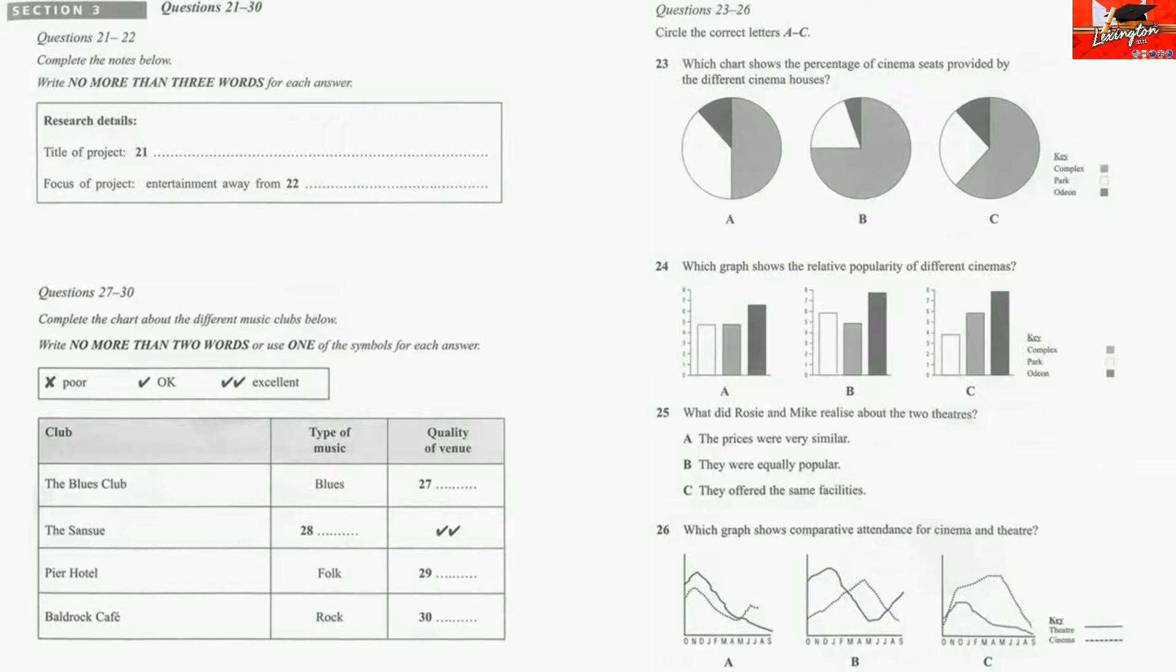We deliberately omitted those as we really wanted to examine outside entertainment in the town as opposed to on the university campus. Actually, there were a lot of areas to choose from, but in the end, we limited ourselves to looking at three general categories. Cinema, theatre and music. Right.